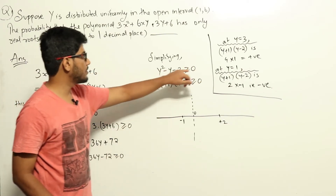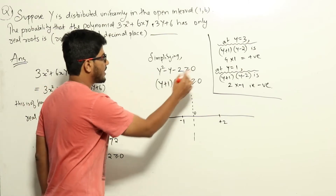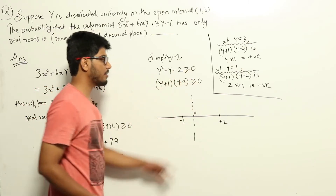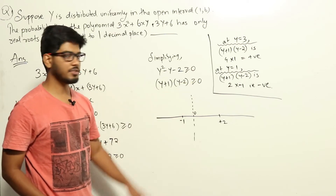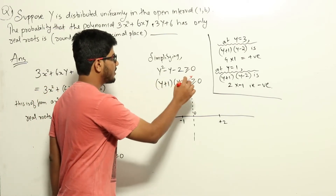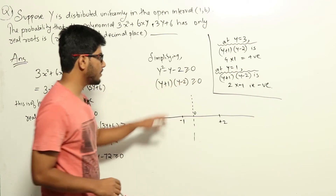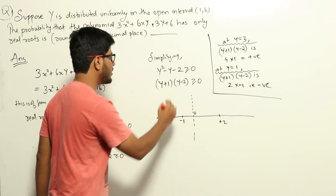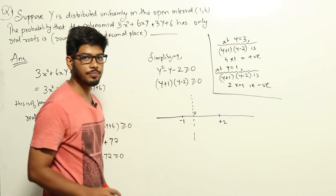We can factor the expression as (y + 1)(y − 2) ≥ 0. This product becomes zero at y = −1 or y = 2, and must be positive elsewhere for the condition to hold.